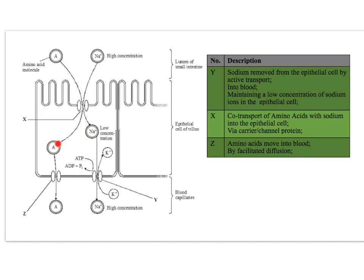The amino acids now have a high concentration inside the epithelial cell and move down their concentration gradient through channel proteins into the blood by facilitated diffusion. Here are the mark points for the absorption of amino acids into the blood across an epithelial cell, with each mark point separated by a semicolon.